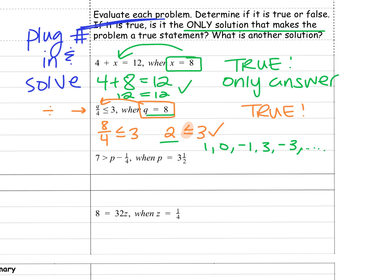Next, 7 is greater than p minus 1/4 when p is 3 and a half. So I'm going to say is 7 greater than 3 and a half minus 1/4. I know 3 and a half is really 3 and 2/4. Now I have a common denominator I can subtract. Is 7 greater than 3 and 1/4? Well, yes it is. So this is true.